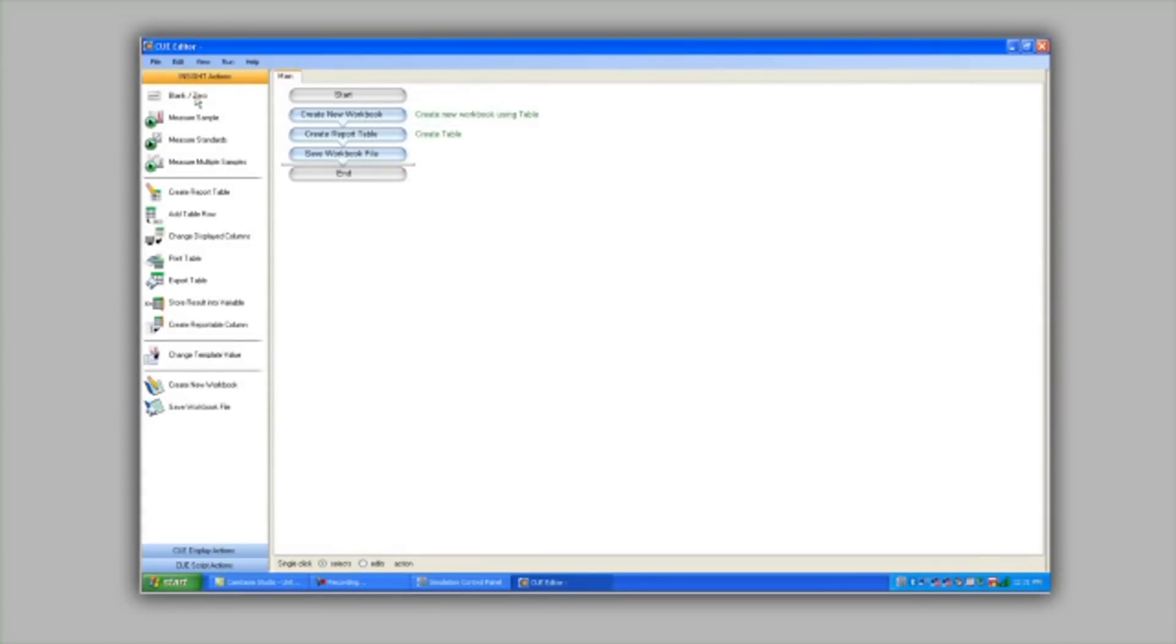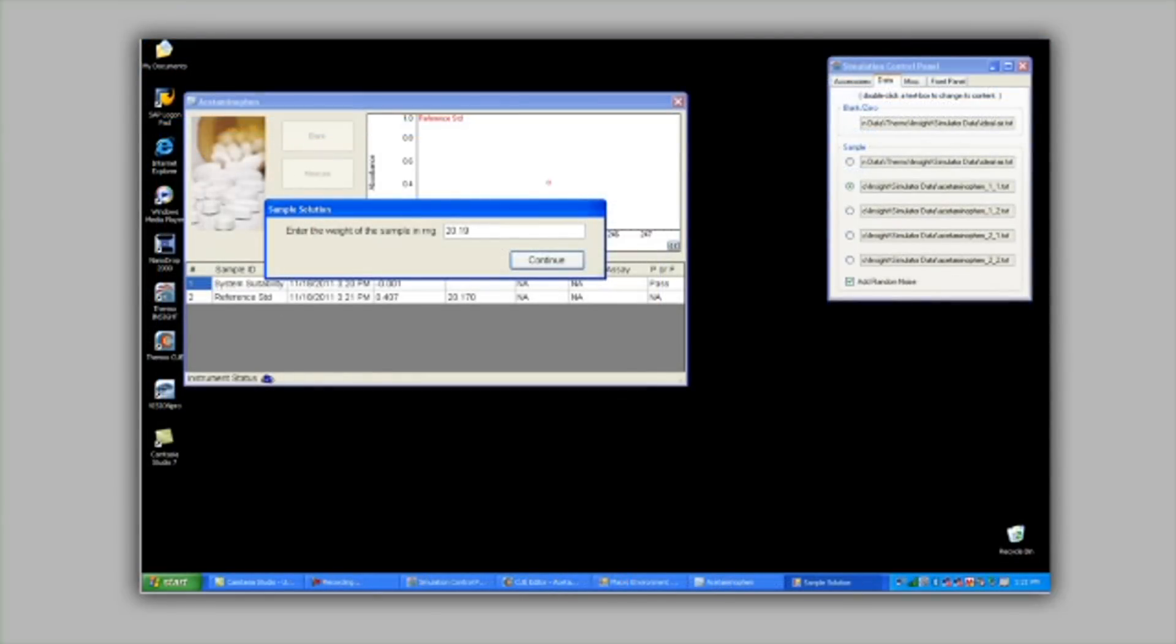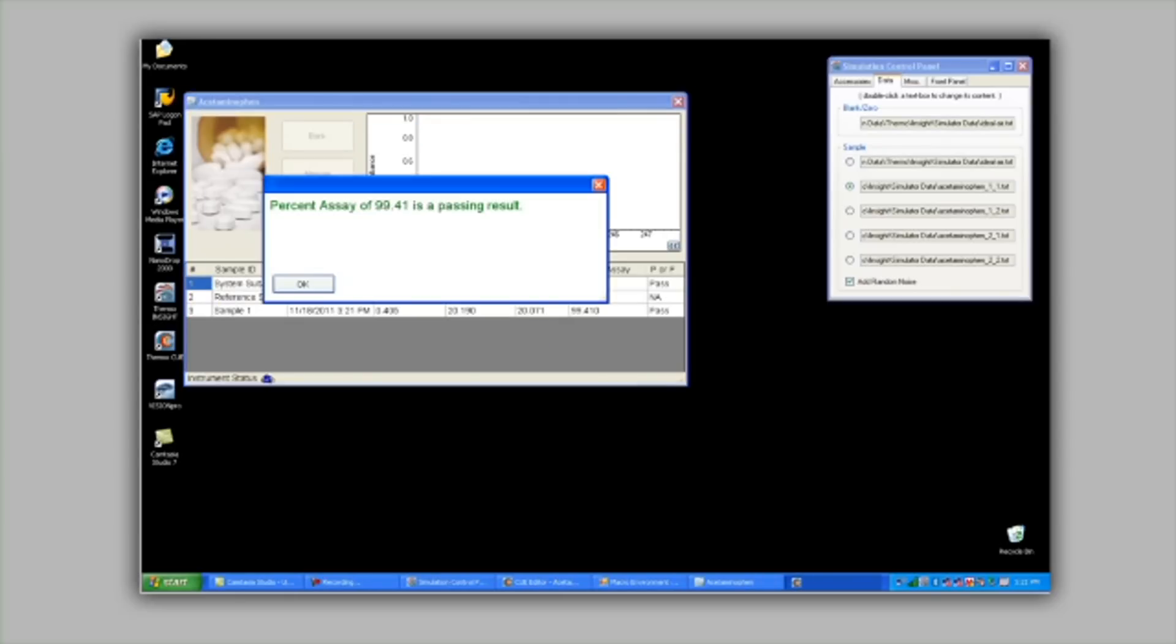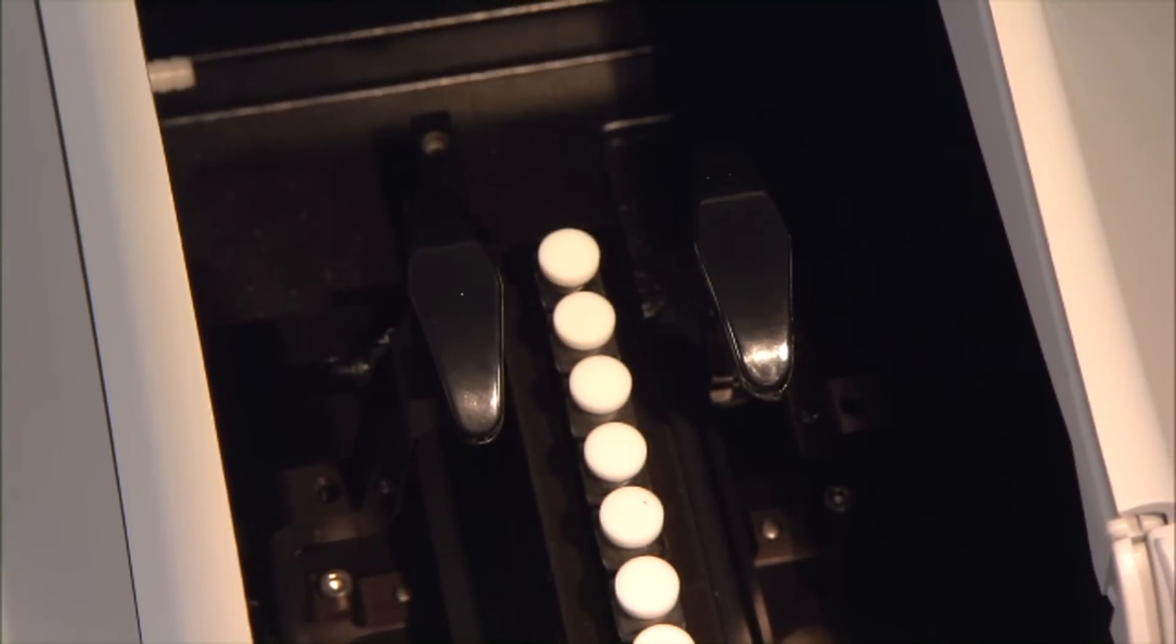For example, a QA QC lab can customize the Evolution 200 to enforce adherence to defined protocols, perform complex data calculations and analyses, determine pass-fail results based on previously defined criteria, and utilize compatible accessories.